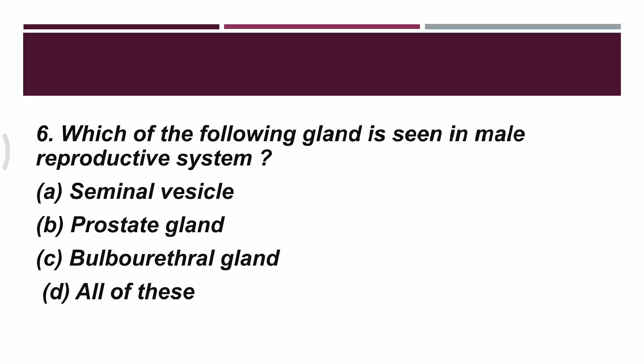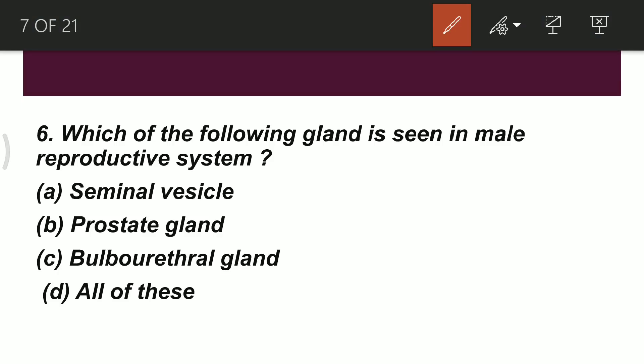Question 6: which of the following glands is seen in the male reproductive system? As discussed in our lectures on the male reproductive system, three glands are present in males. The correct option is D — all of these — meaning seminal vesicle, prostate gland, and bulbo-urethral gland are all present in males.